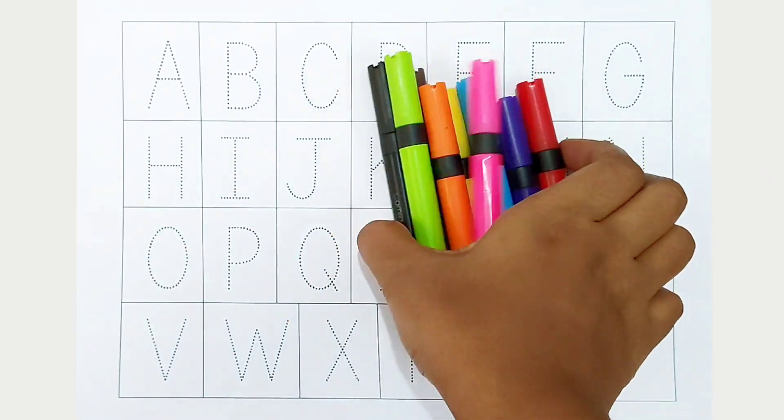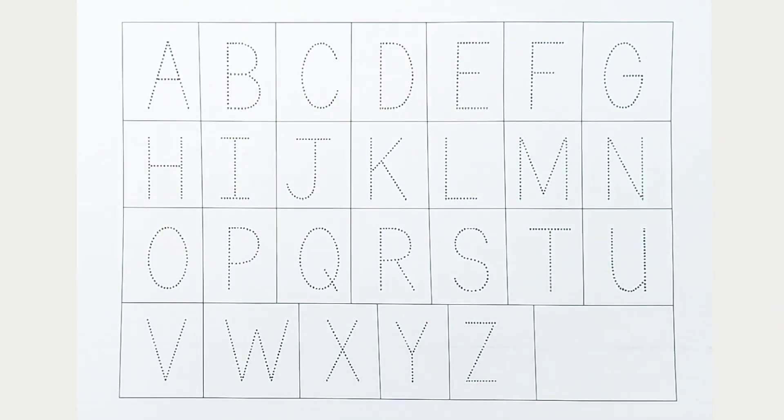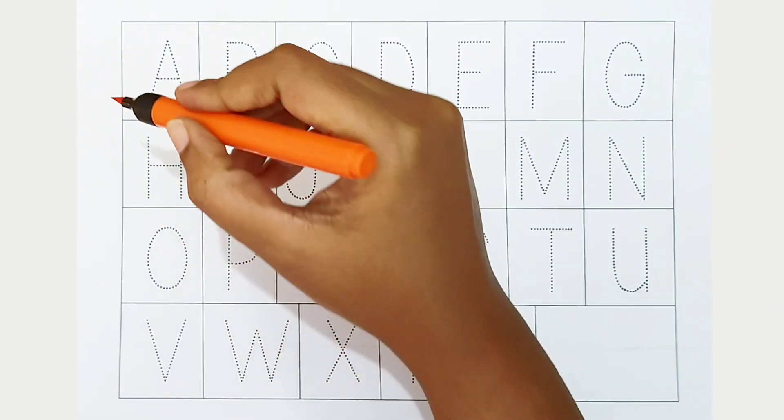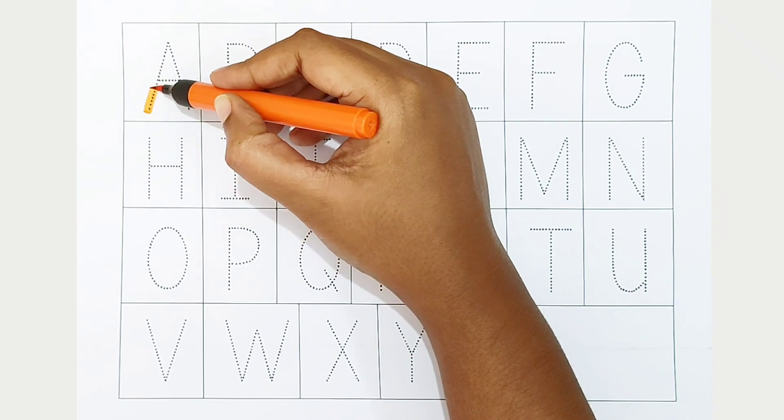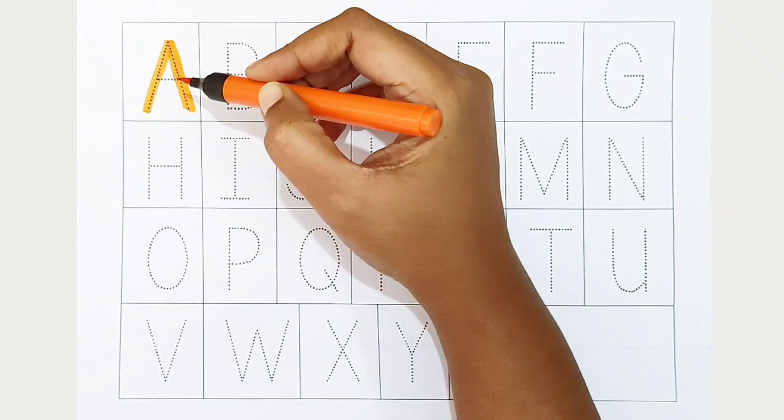Hi kids! Today we can learn the alphabets from A to Z. Let's begin. A, orange color. A is